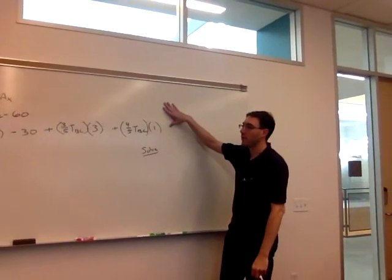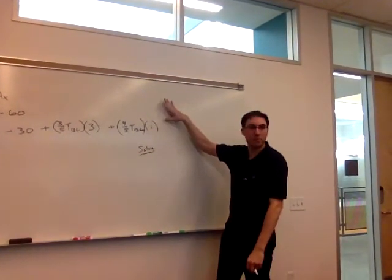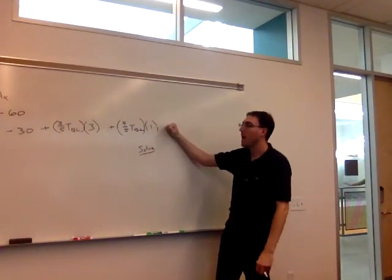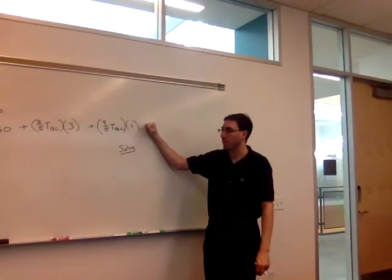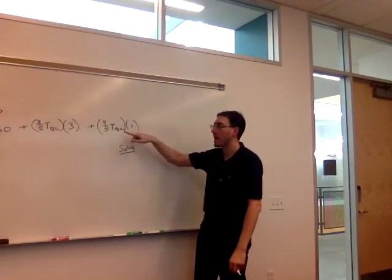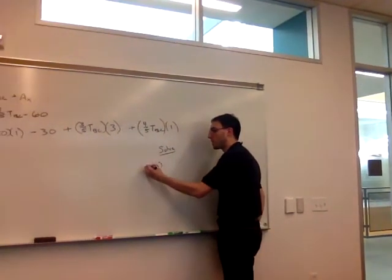So if we look, we have three equations, we have three unknowns, we have a solvable system, and because of the way we developed equation 3 about A, it's going to be pretty straightforward to solve.